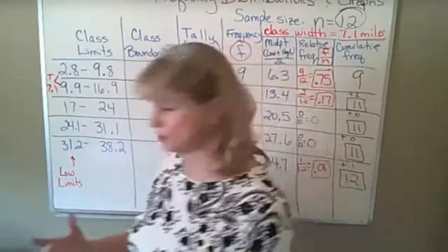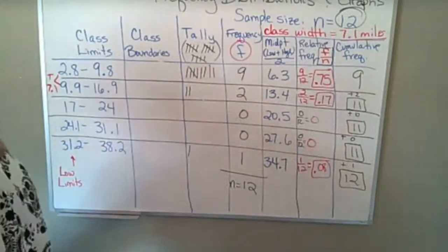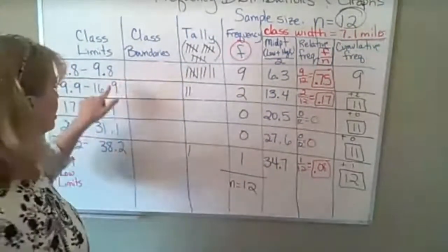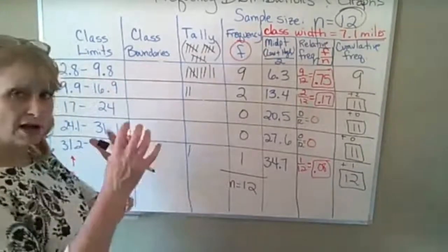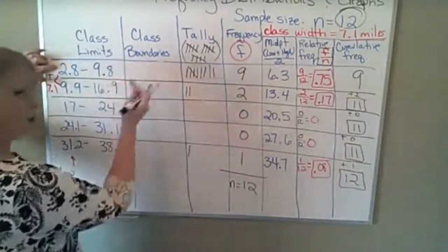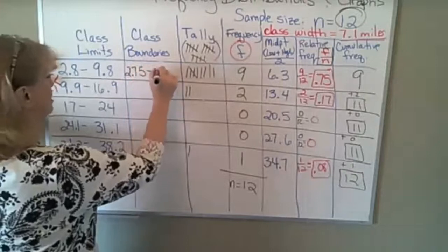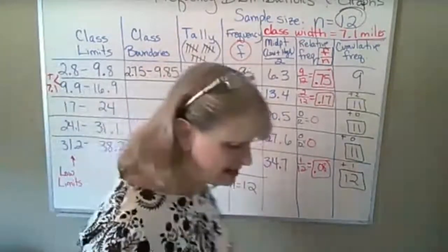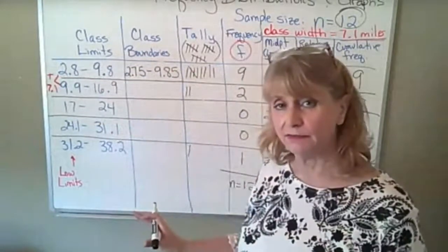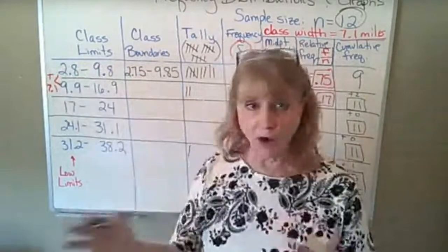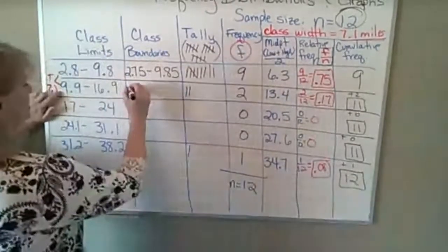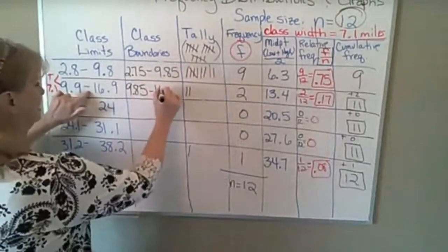Here's what we do to make these so that they don't have gaps. Notice these are all to the tenths place on the class limits — those are going to go out one more place, to the hundredths place. We make each class just a little bit bigger. So instead of starting at 2.8, we go back five hundredths and call that 2.75, and we call the upper end 9.85. I subtracted five one-hundredths and added five one-hundredths.